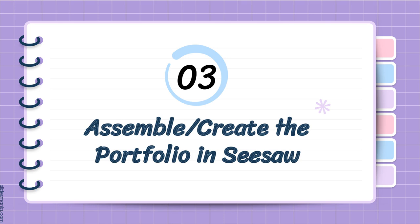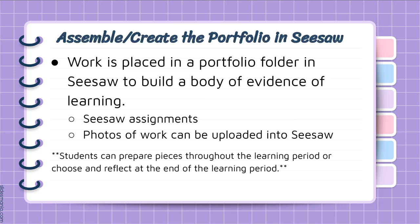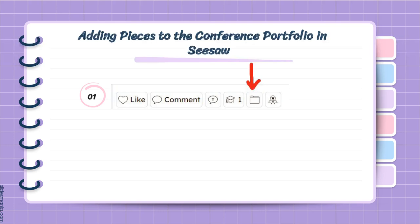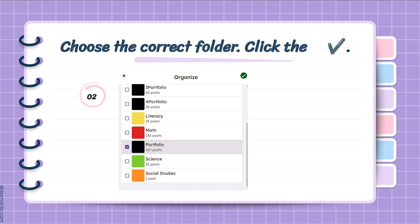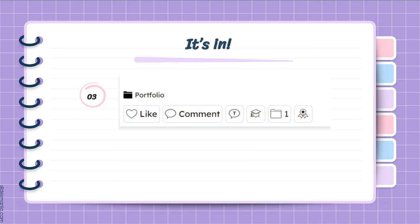The next step is assembling and creating the portfolio in Seesaw. Work is placed in a portfolio folder in Seesaw to build that body of evidence — it can be assignments already in Seesaw or photos of work uploaded in. That's one thing I love about Seesaw: it can be used in so many ways for students to show their learning. There's a simple tutorial — on any assignment students create in Seesaw there's a little folder icon they click on, and I already have the portfolio folder set up to go. Then they just click on it and it appears tagged at the bottom of the assignment, and everyone can see it's where it belongs.